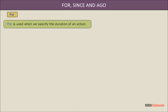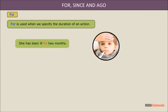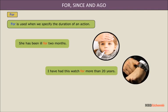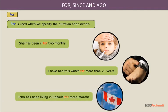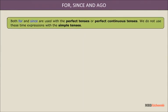For is used when we specify the duration of an action. For example: She has been ill for two months. I have had this watch for more than twenty years. John has been living in Canada for three months. Both for and since are used with the perfect tenses or perfect continuous tenses. We do not use these time expressions with the simple tenses.